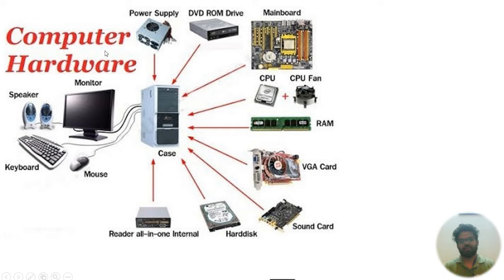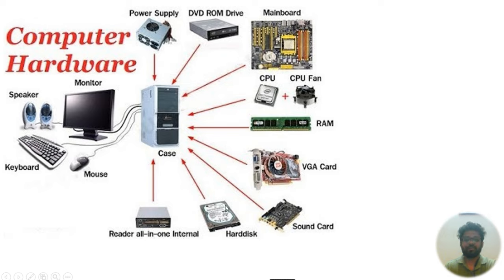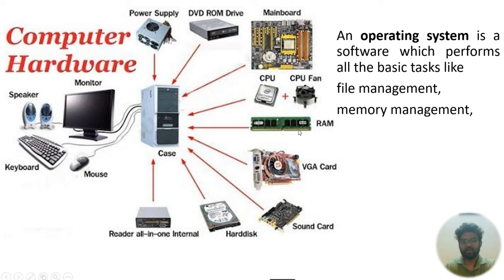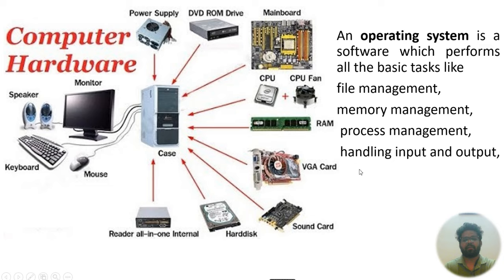Computer hardware includes components such as hard disk, CPU, monitor, mouse, keyboard, speakers, sound card, graphics card, RAM, motherboard, CD ROM, and power supply. An operating system is software that performs basic tasks: file management using the hard disk, memory management using RAM, process management using the CPU, and handling input and output via card readers and DVD ROMs.